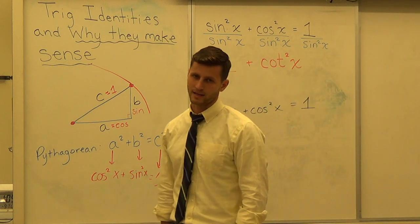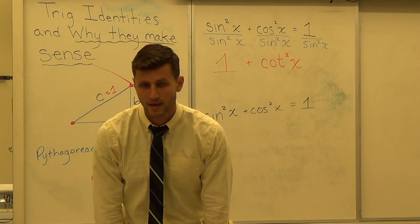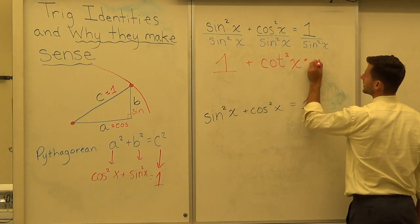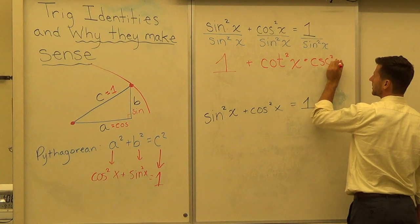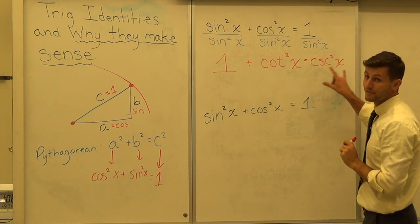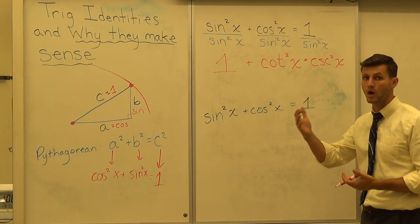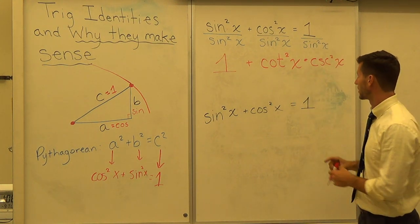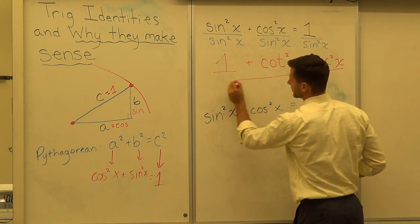And one over the sine squared of X. How would I write that? That's equal to the cosecant squared of X. That's by definition what cosecant means. It means one over sine. So this is just a definition. And there you have the second formula that you can use.